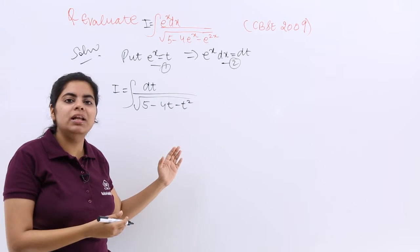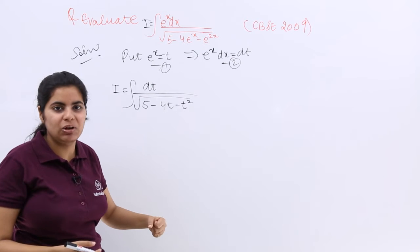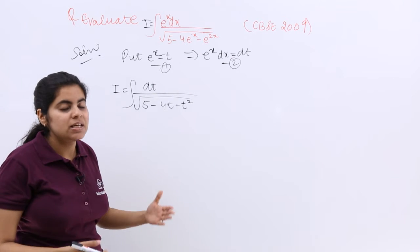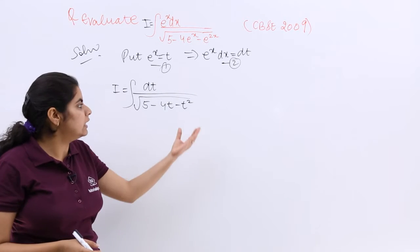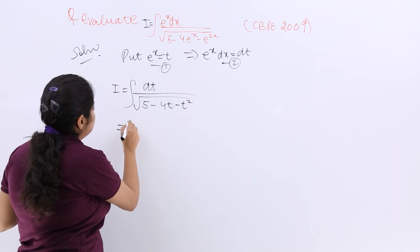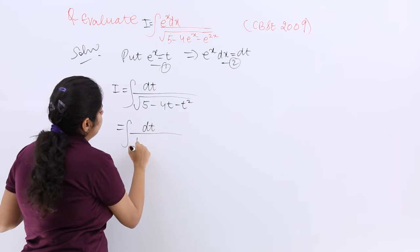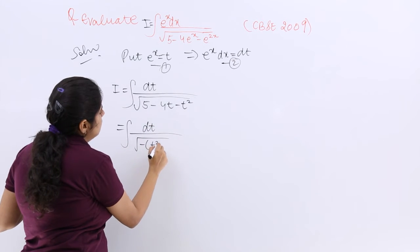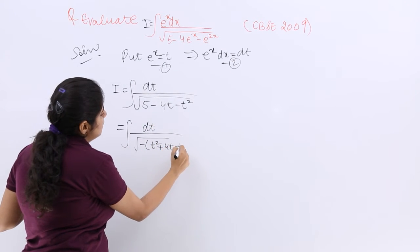Now see, it is simple expression. Now I can easily solve it. Again, the same steps. See, the coefficient of the leading term should be unity and then completion of square. Let me take minus sign common. So it is minus t square plus 4t minus 5.